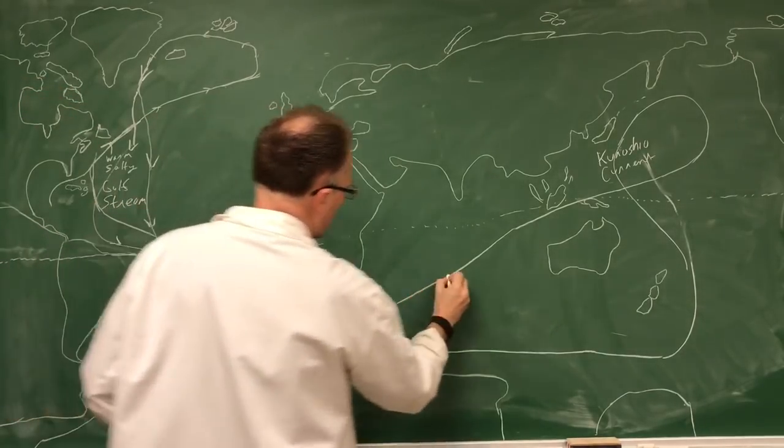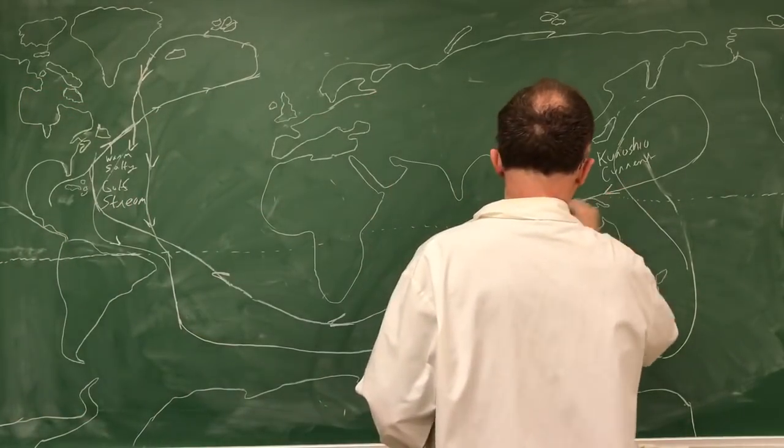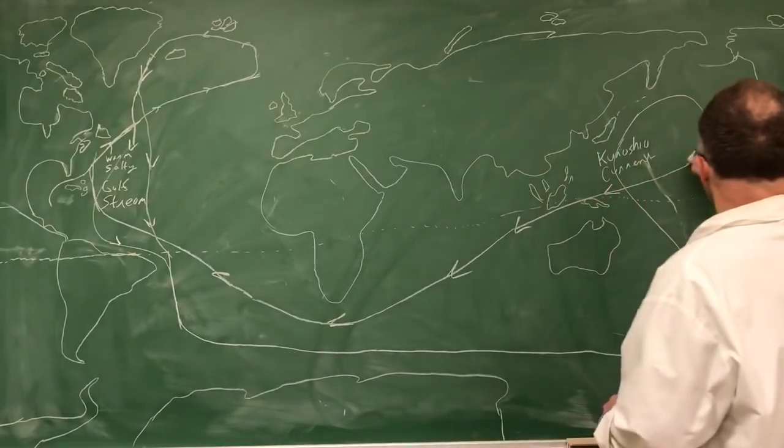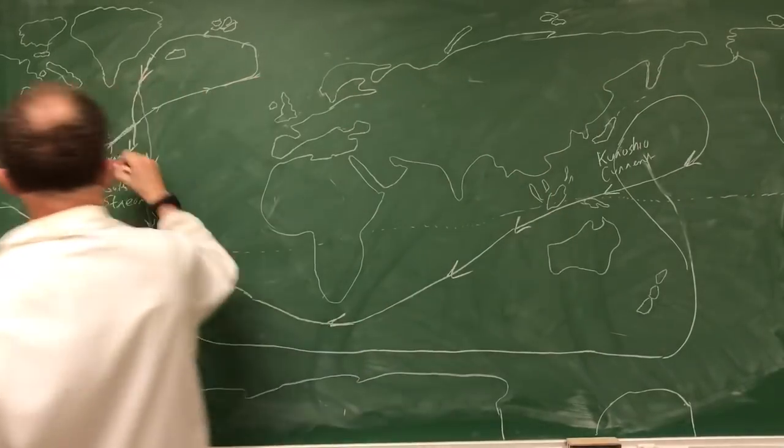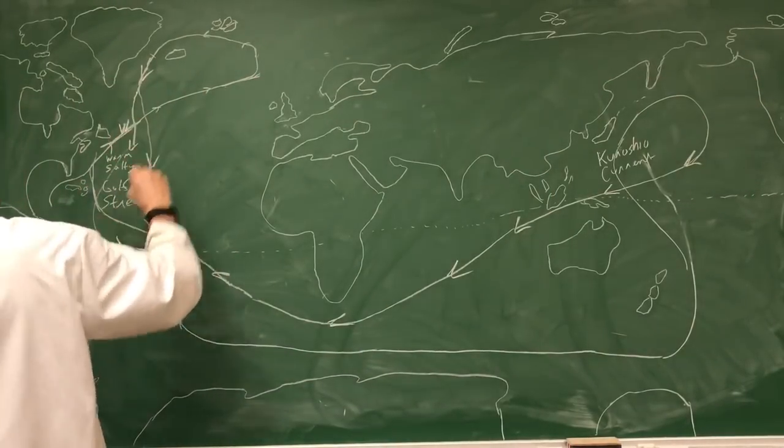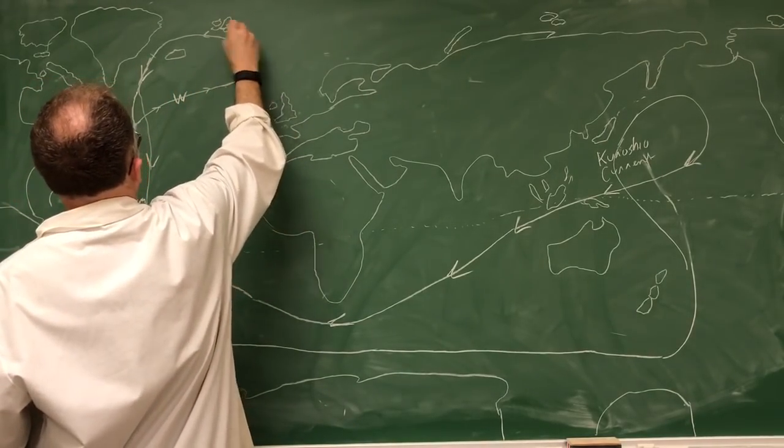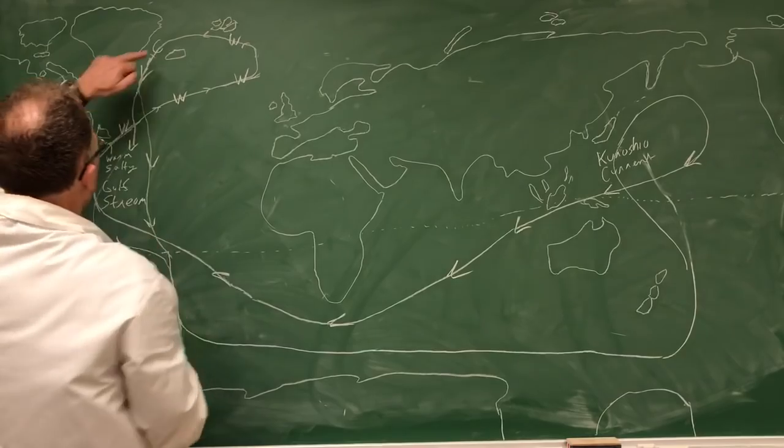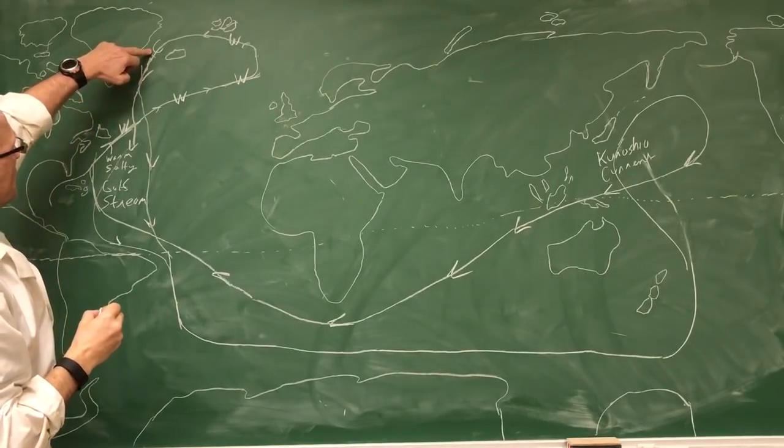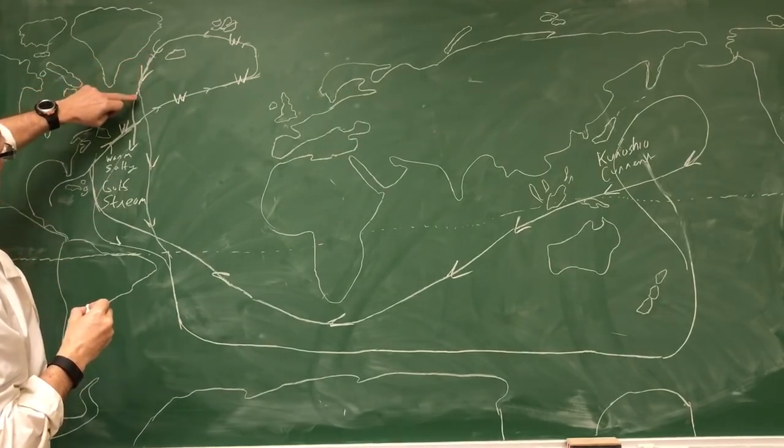So we get this water circulation loop. It's warm here, warm, warm, less warm. It's cold here, cold enough and salty enough that it descends to the ocean floor here. So this is all cold water coming down.